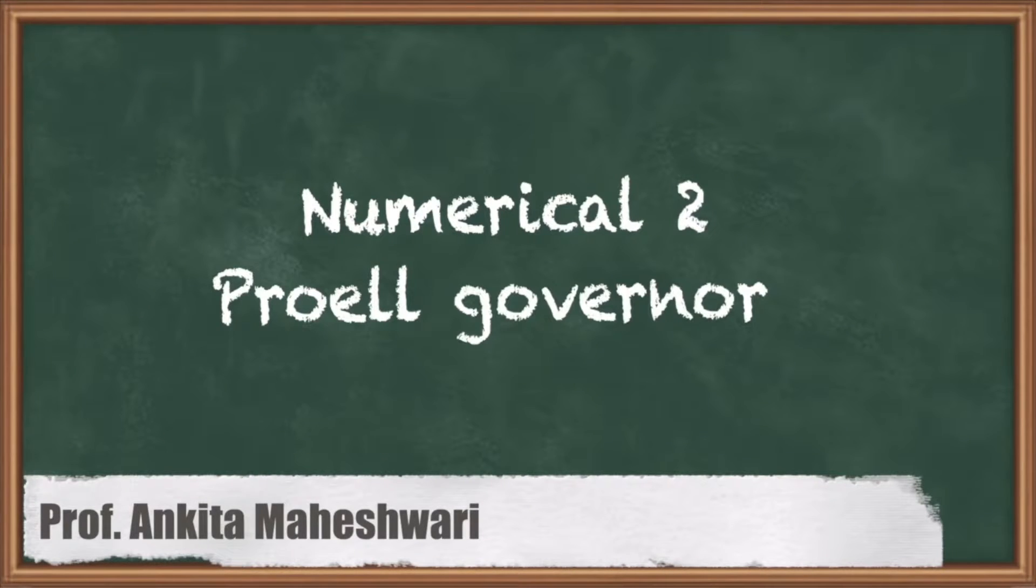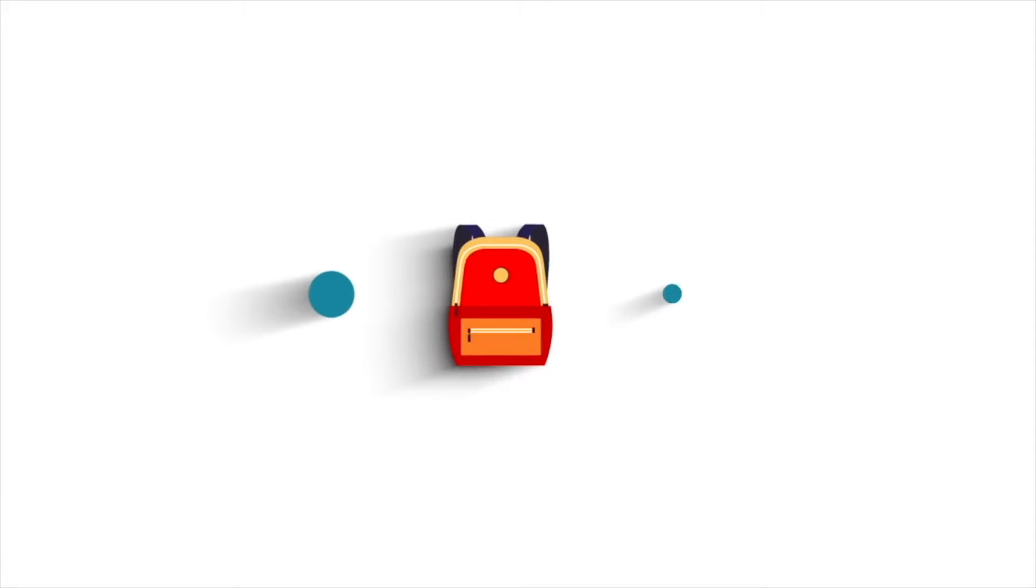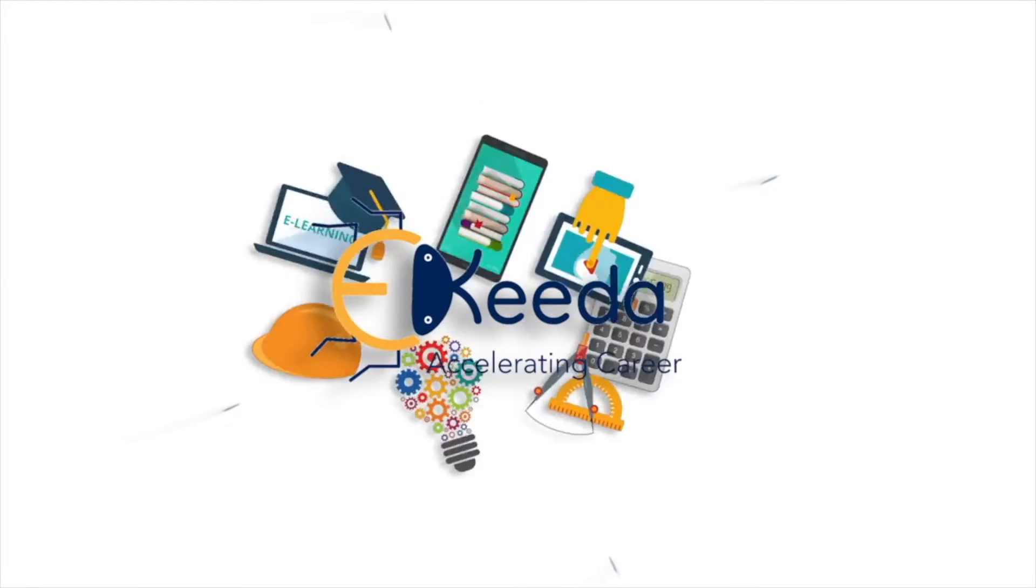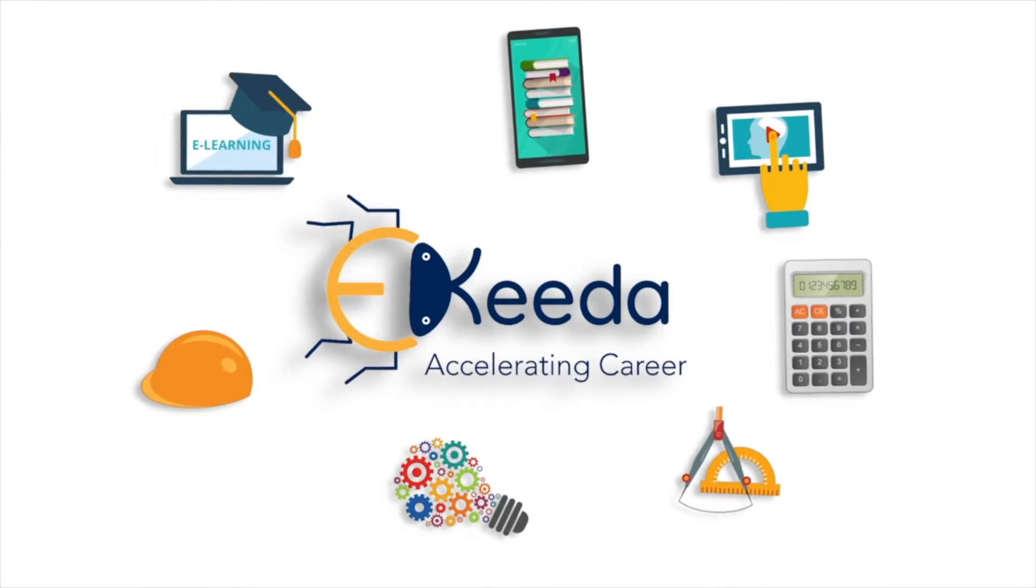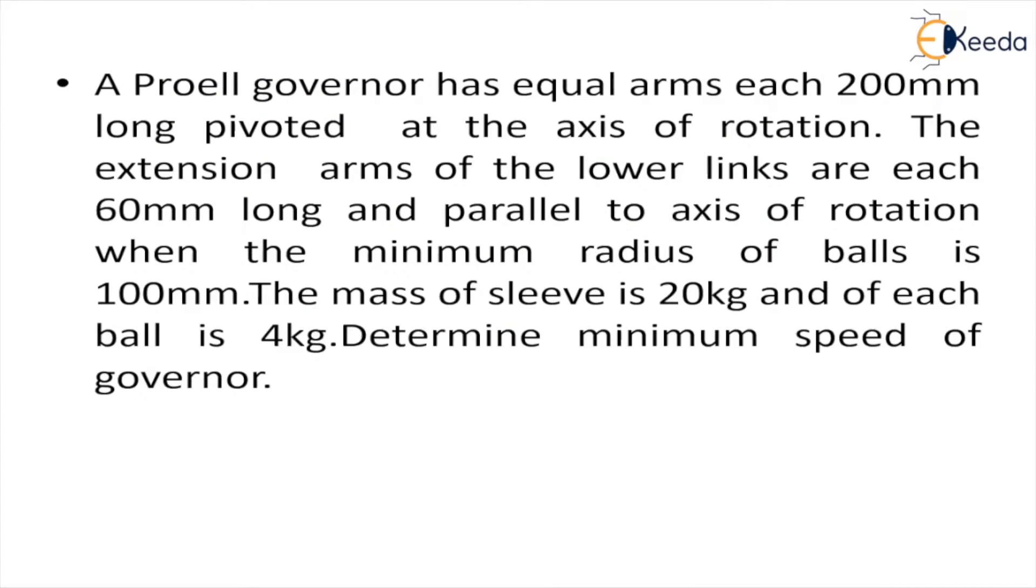Hello everyone, in this video we'll discuss a numerical on Proell governors. The question says that the Proell governor has equal arms of length 200 mm which are pivoted at the axis of rotation.